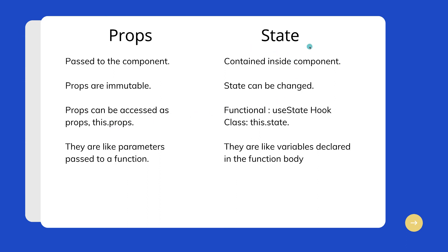Using state is quite different. We haven't taken a coding example yet, but this is how state is accessed: in a functional component, we use the useState hook to access state. We haven't touched hooks yet, but for now remember that to create a functional component with state, you use the useState hook — we'll cover an example in upcoming lectures. In a class-based component, you access state by simply using this.state. To summarize: props are like parameters passed to a function, while state is like variables declared inside the function body.